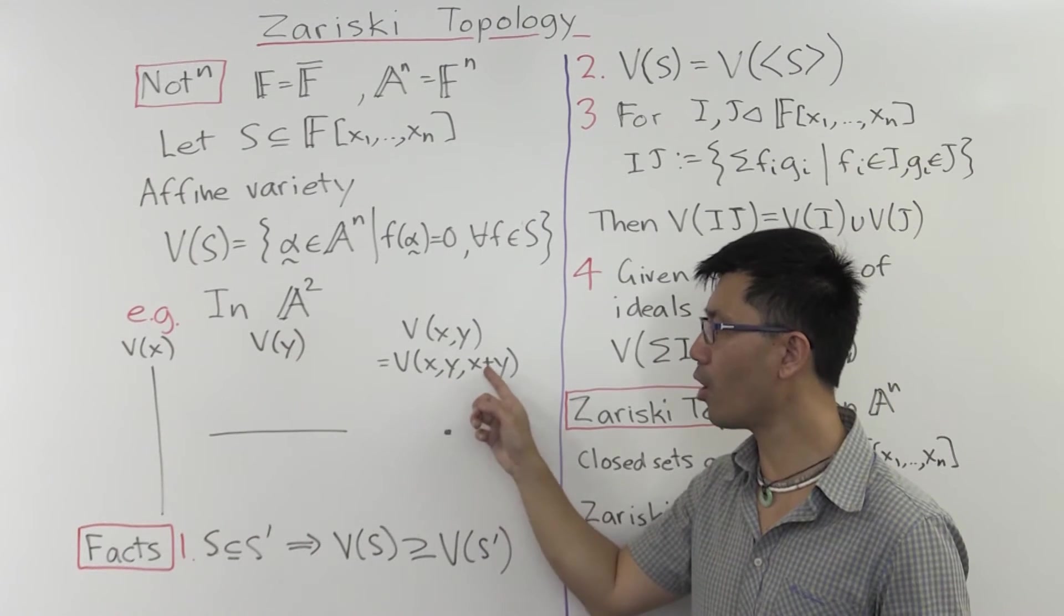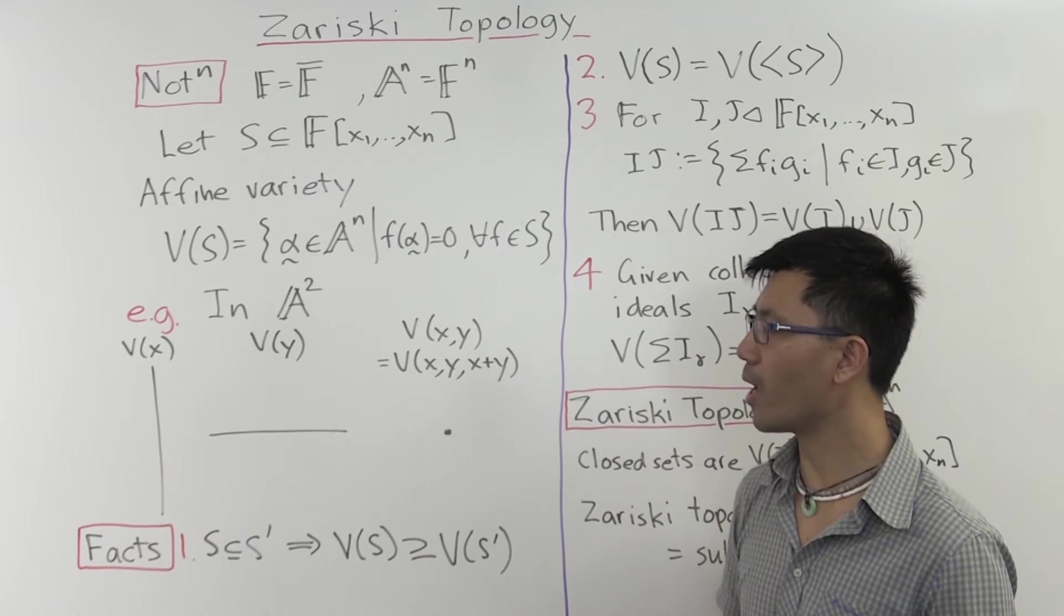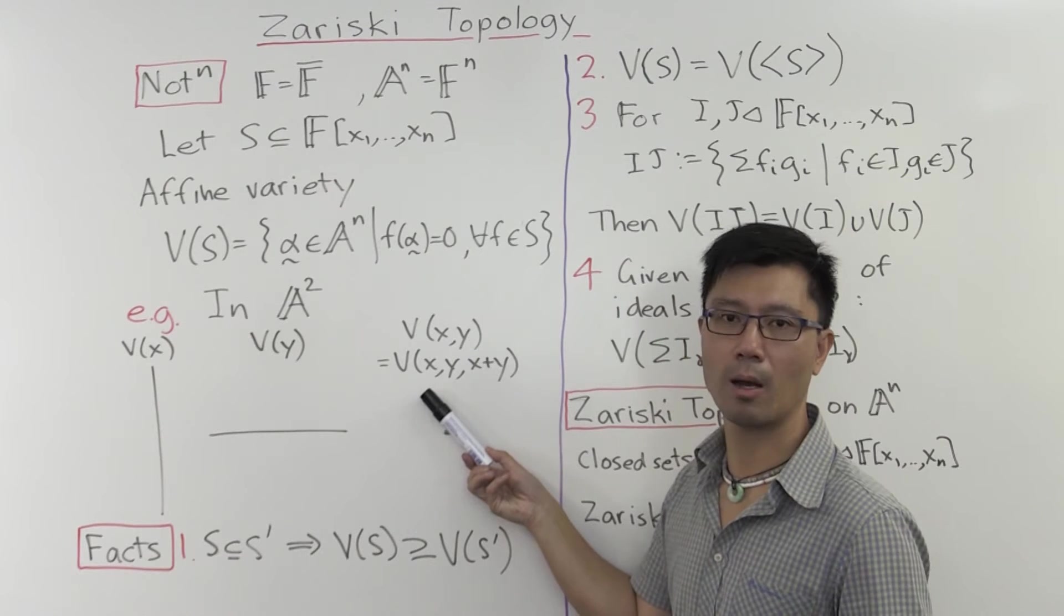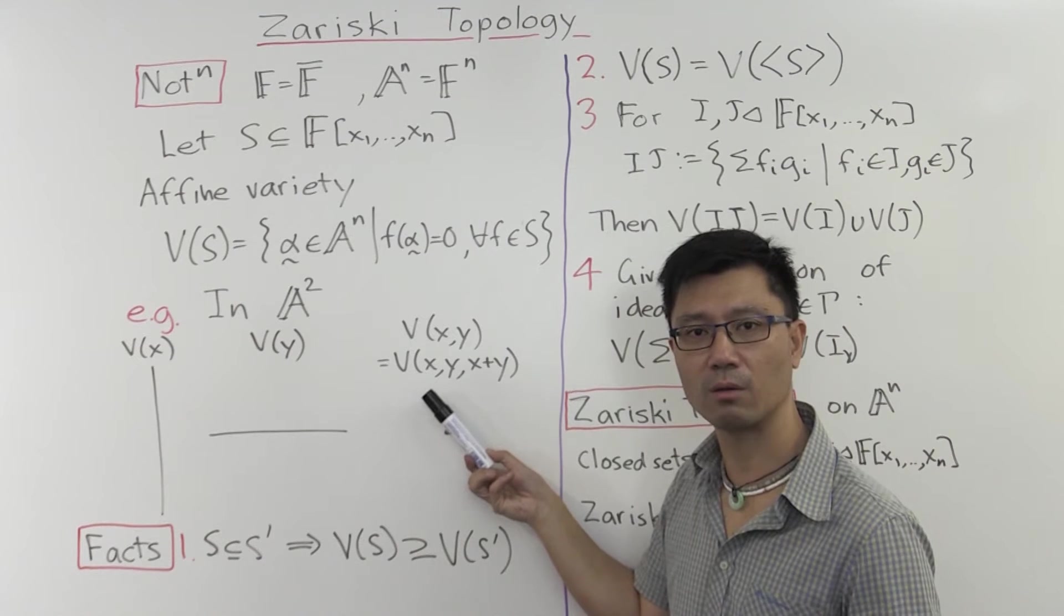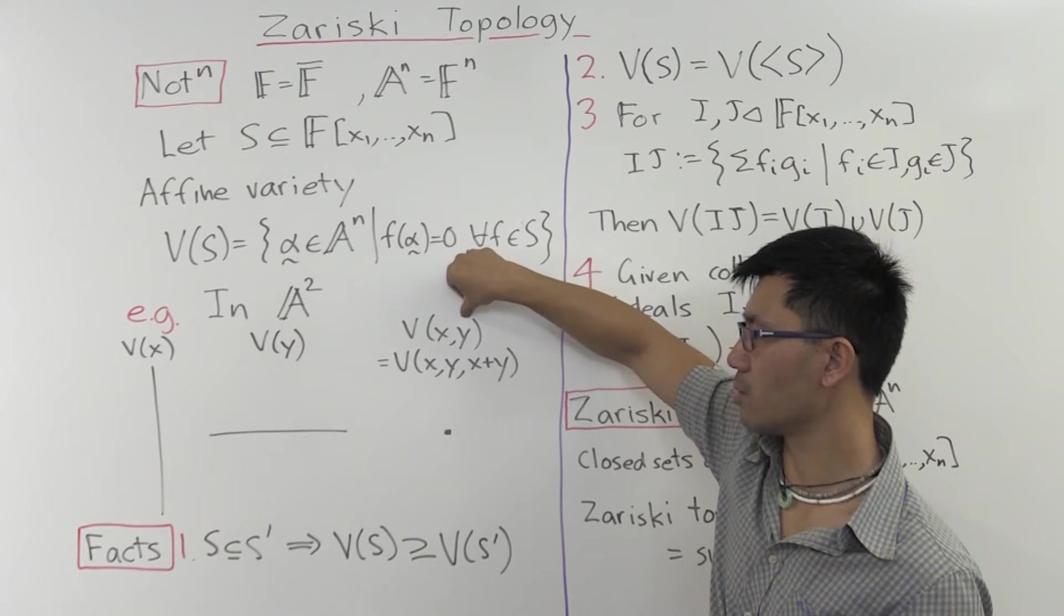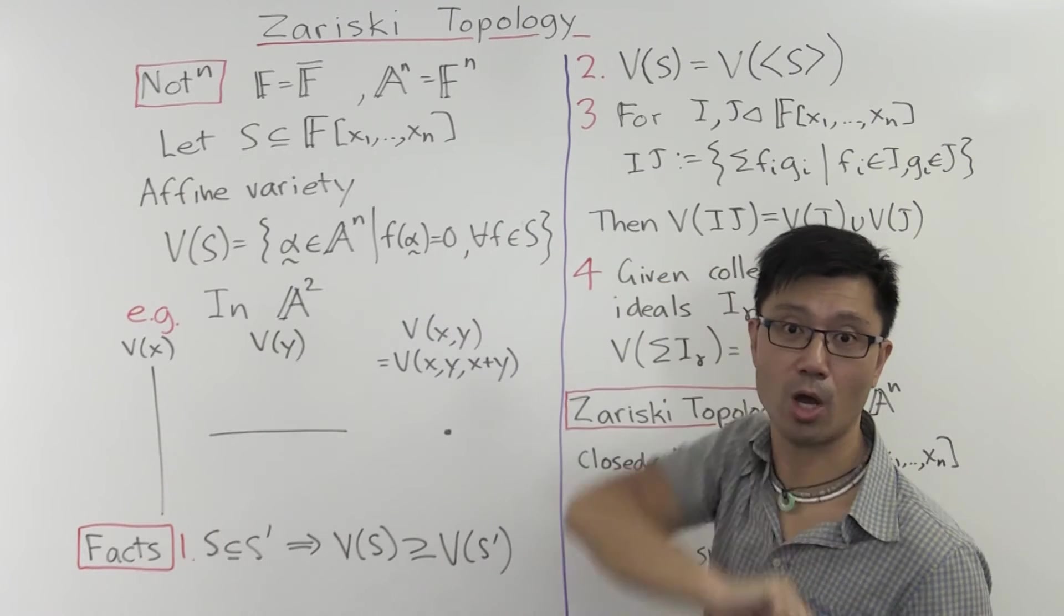So putting the two together gives you the intersection. Let's suppose we throw a third one in, x plus y, where you can look at the line where x plus y equals zero and intersect it with that too. But intersecting with that doesn't shrink this point any further. So this variety carved out by x equals zero and y equals zero is the same as the zeros of these three polynomials.